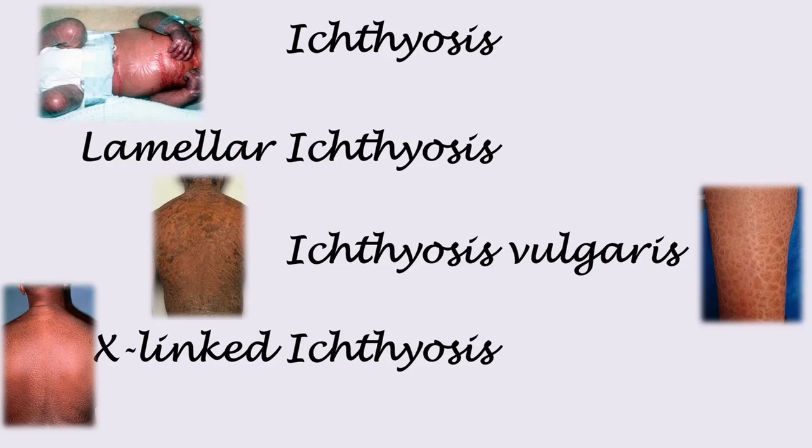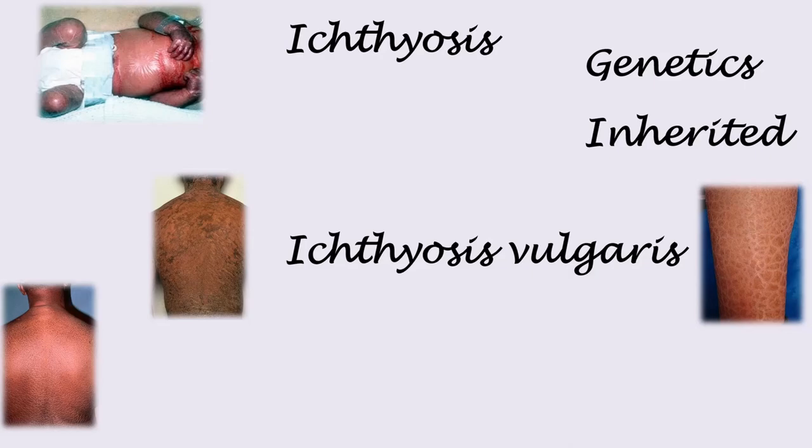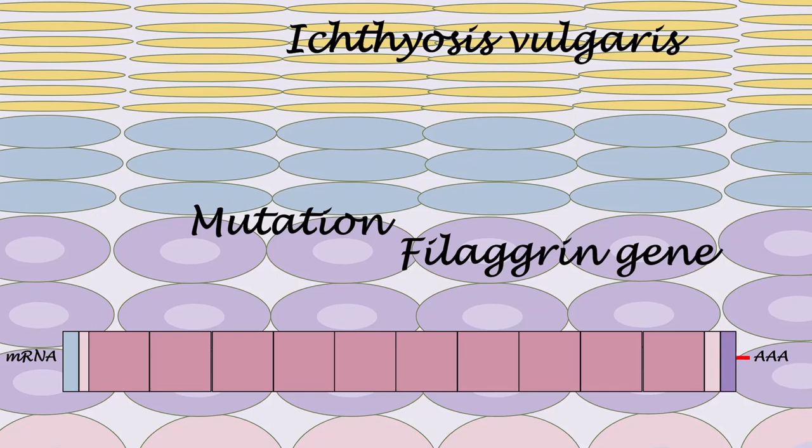Ichthyosis vulgaris is caused by the mutation of genes that code for pro-filaggrin proteins. Pro-filaggrin turns to filaggrin, which is the major component of keratohyalin, a protein involved in keratinization. The mutation leads to less pro-filaggrin and also less filaggrin. Filaggrin deficiency leads to a leaky skin barrier that allows more water loss, so the skin becomes dry and scaly.